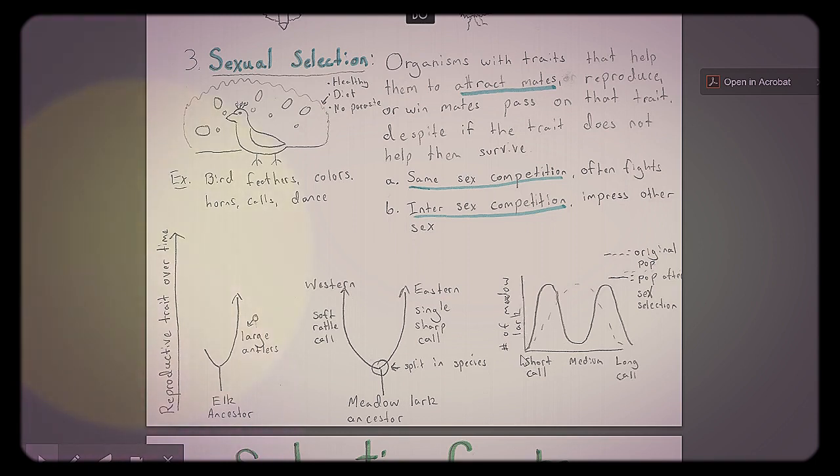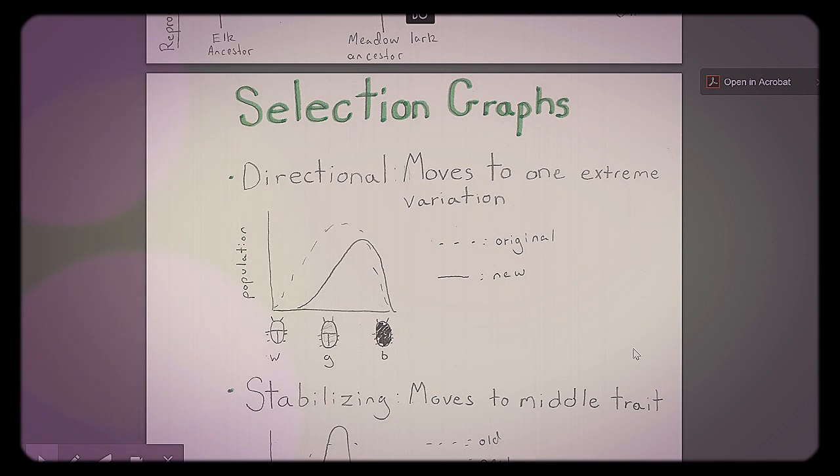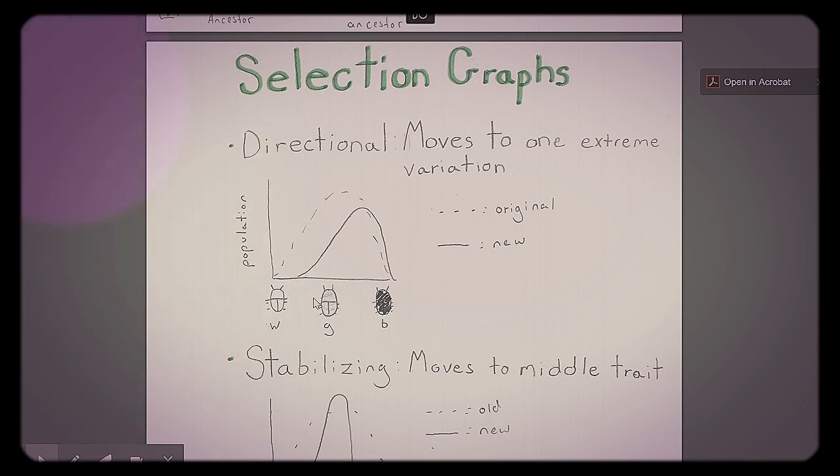And then we can see that again, here's another one of those graphs, and we'll talk about these in a second. But the original population of meadowlarks maybe had a medium call, and a few had short calls, and a few had long calls. And then we look at the new population after selection. Now there's going to be more short called ones, and they become western meadowlarks, or the eastern meadowlarks, and become the other ones. So we see this split in the population. And there's a few graphs. You don't have to memorize the type of graph, but we're just trying to understand and be better graph readers in general. There's directional selection that moves towards one extreme variation. It doesn't have to be this way all the time, but here's the original population, maybe more lighter colored. And then after selection, it goes to the darker colored, and the whiter ones die out. It could go the other way, too. This is just an example.